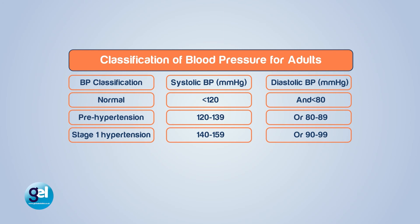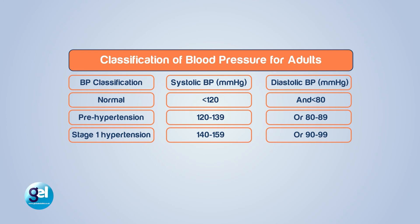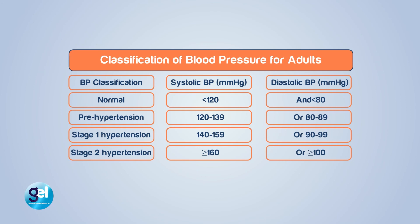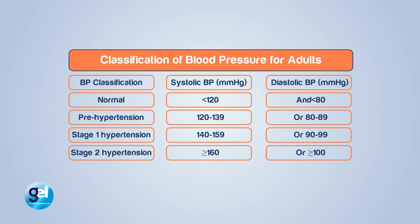The next stage is stage one hypertension, with a reading of 140 to 159 over 90 to 99. This can be severely dangerous and you should already have been to the doctor or GP to discuss this, as there will be visible signs and you'll be able to feel that high blood pressure. The last stage, categorized as the worst, is stage two hypertension — you'll probably be in hospital at this point if above this range, with readings of 160 over 100 or more, and you'll see your health declining at an advanced rate.